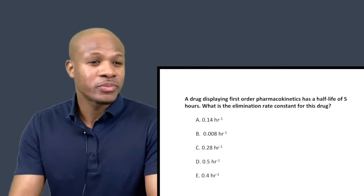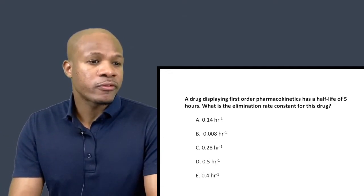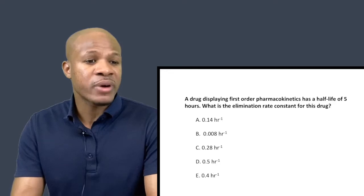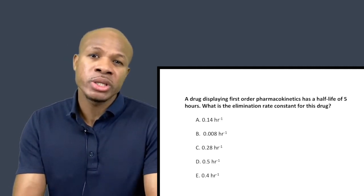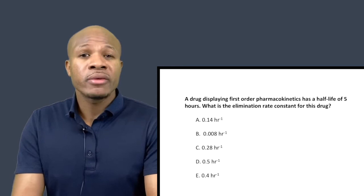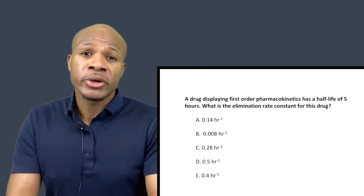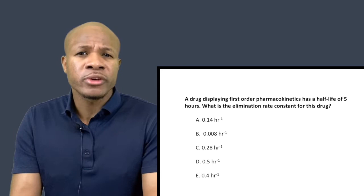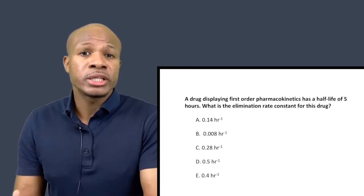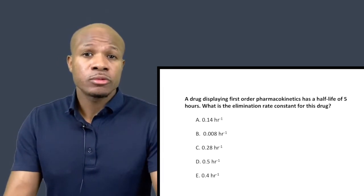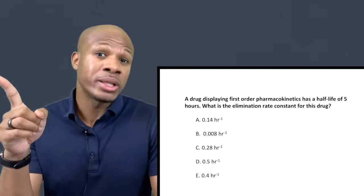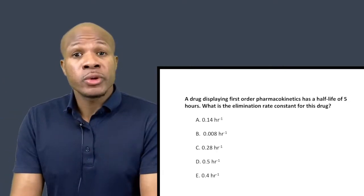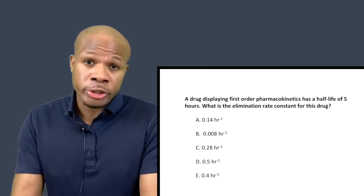Question number one: a drug displaying first order pharmacokinetics has a half-life of five hours. What is the elimination rate constant for this drug? We have to make sure we understand the question before we dive in. We have a drug that displays first order pharmacokinetics. First order kinetics is a drug whose rate of elimination is directly proportional to the drug's concentration raised to the power of one — that's why it's called first order.